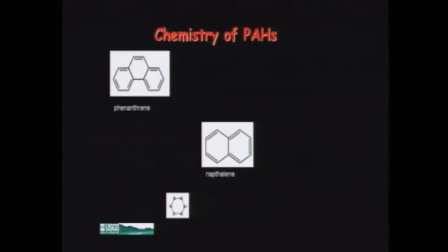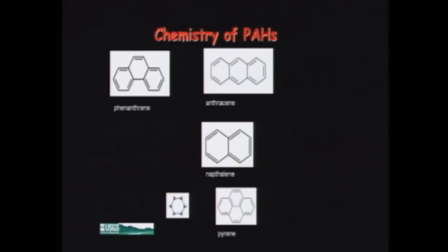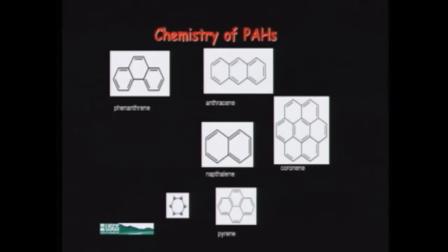We can go from two rings, which is naphthalene, all the way up to seven rings, which is coronene, and you can make them even bigger than that. Every different way you can put those tiles together like puzzle pieces is a PAH. They have different chemical characteristics based on their size. The smaller ones tend to be more soluble, the larger ones tend to be more persistent, tend to stick to sediment, and tend to be more carcinogenic.